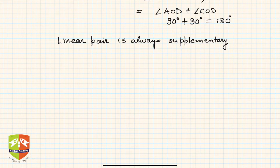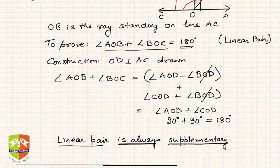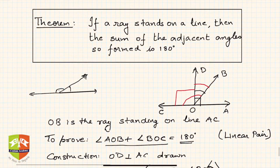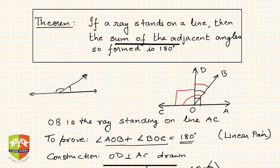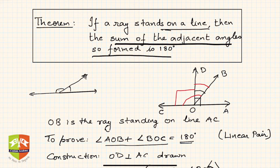Linear pair is always supplementary — that is what is understood. Now we will be seeing the converse of this theorem. The converse is also true: if the sum of adjacent angles is 180 degrees, then the uncommon arms are opposite to each other, meaning the uncommon arms form a line. That is what we are going to learn in the next session.